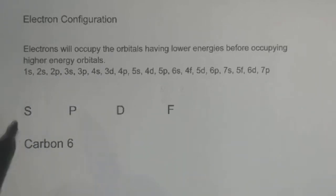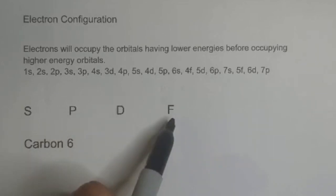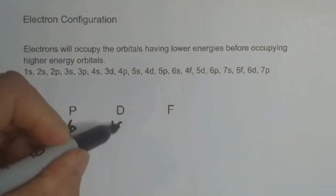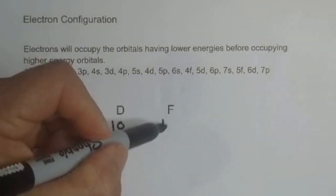Now the orbitals are s, p, d, and f, which is short for sharp, principle, diffuse, and fundamental. S can hold up to 2, P can hold up to 6, and notice it goes up by 4. D is 10 and then F is 14.